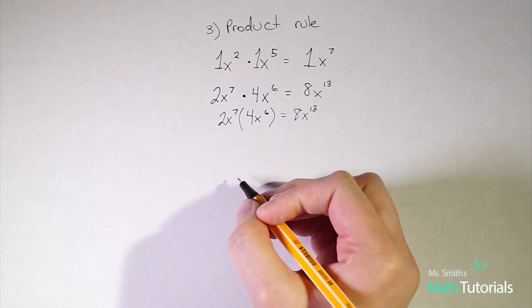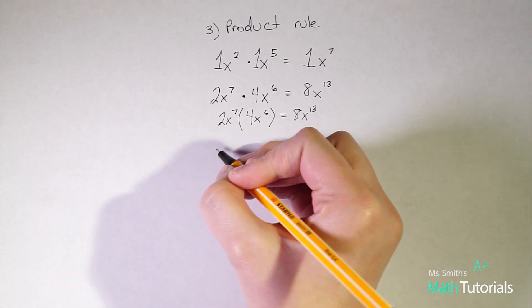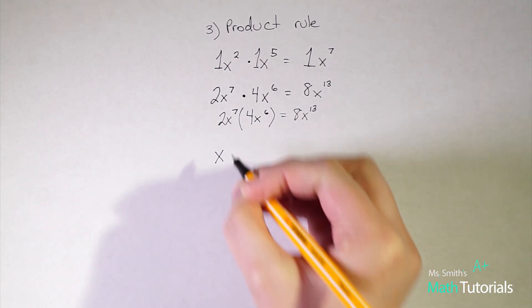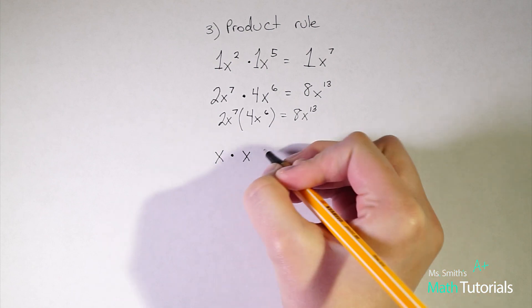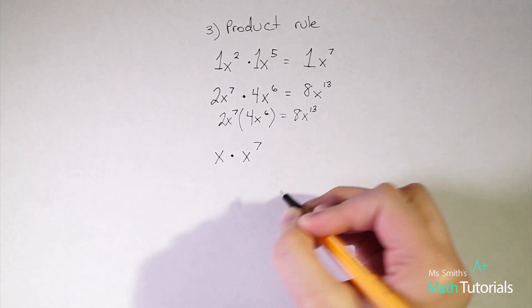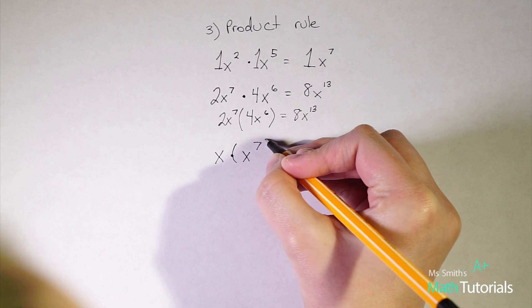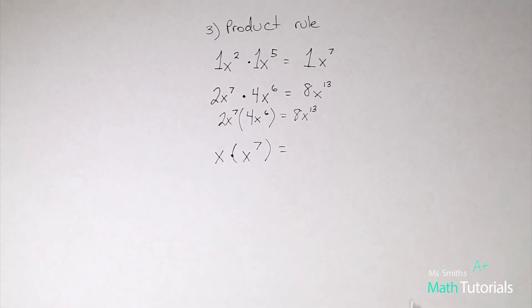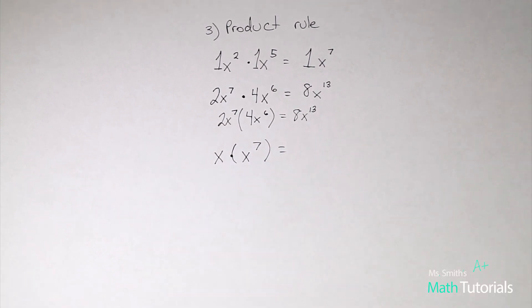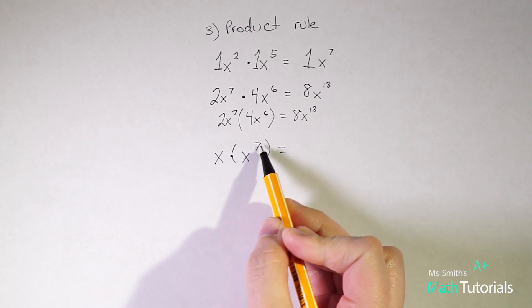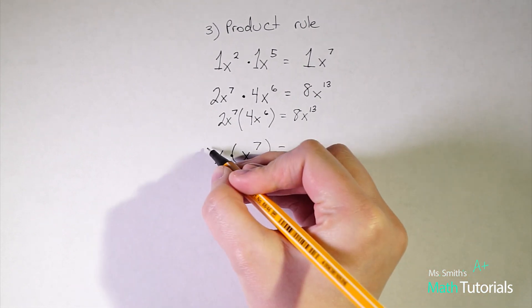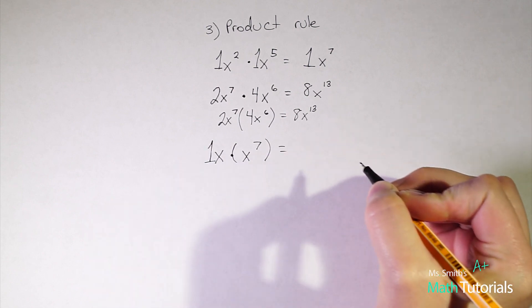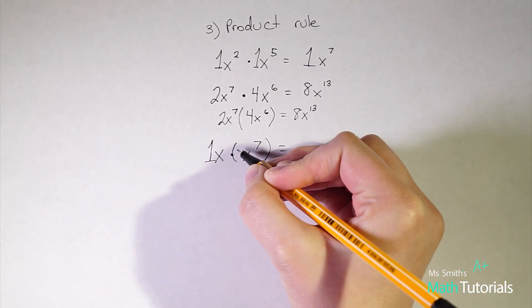Now one kind of tricky thing to remember that sometimes students forget is you might have x times x to the seventh, or as we might write it x times x to the seventh. When we're solving this a lot of times students say okay I have like bases, I've got an x next to the seventh, my answer would be x to the seventh.